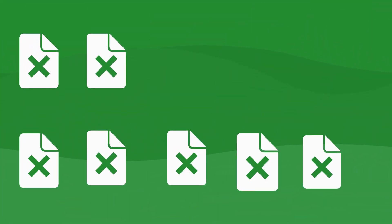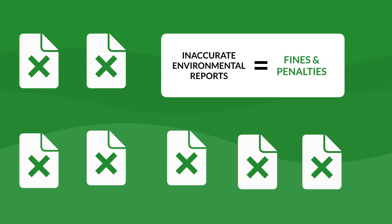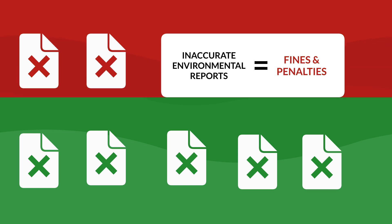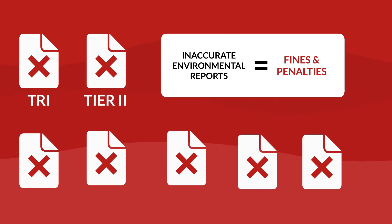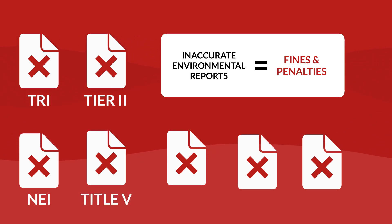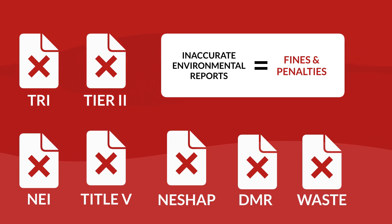Looking at our example of toluene, mistakenly using a lower value could lead to fines and penalties when you submit inaccurate environmental reports, such as Toxic Release Inventory (TRI) Form R, Emergency Planning and Community Right to Know Act (EPCRA) Tier 2, National Emissions Inventory (NEI), Title V Air Permit Compliance, Industry Specific NESHAP, Discharge Monitoring Reporting, and Annual or Biannual Hazardous Waste Reports.